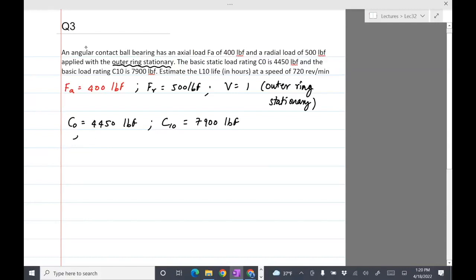The basic load rating C0 is 4,450 LBF. And the basic load rating, that's the static load rating. This is the C10 rating is 7,900 LBF. Our goal is to estimate the L10 life in hours. We are also given the speed, which is 720 RPM. So the key thing here is that this particular bearing is subjected to a radial load and an axial load. And that's why we need to compute an equivalent load. And then once you have the equivalent load, then we can go ahead and solve for the L10 life.